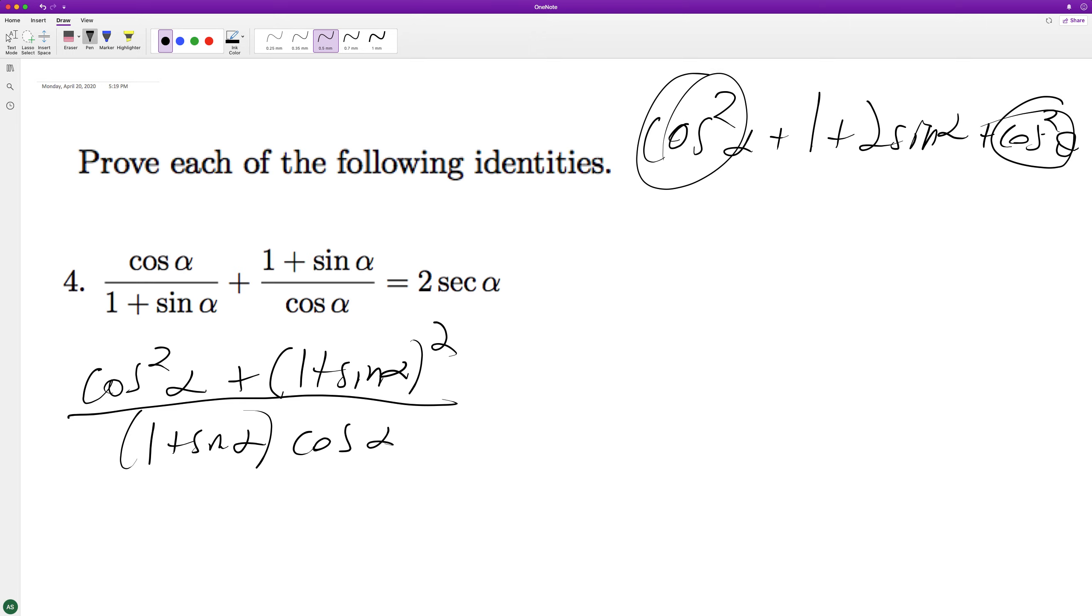So this and this equal 1, so we end up getting 2 plus 2 sine alpha over. You factor out a 2, we get 1 plus sine alpha.